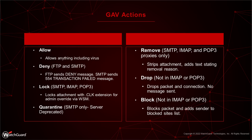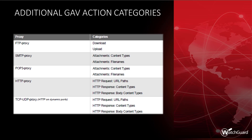Available actions in GAV vary by proxy type: allow, deny (FTP and SMTP), drop, lock (SMTP — quarantines with .clk extension, unlockable by admin), quarantine (SMTP — being phased out), remove (strips attachment), and block (drops connection and adds sender to block sites list). You only see options available for the proxy you're configuring — for HTTP it will just say 'drop.'